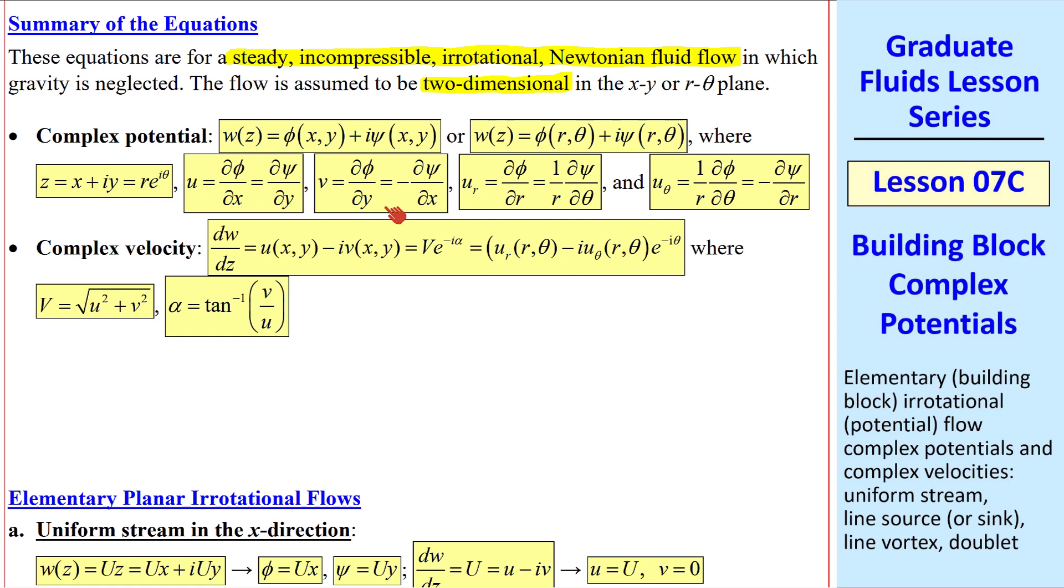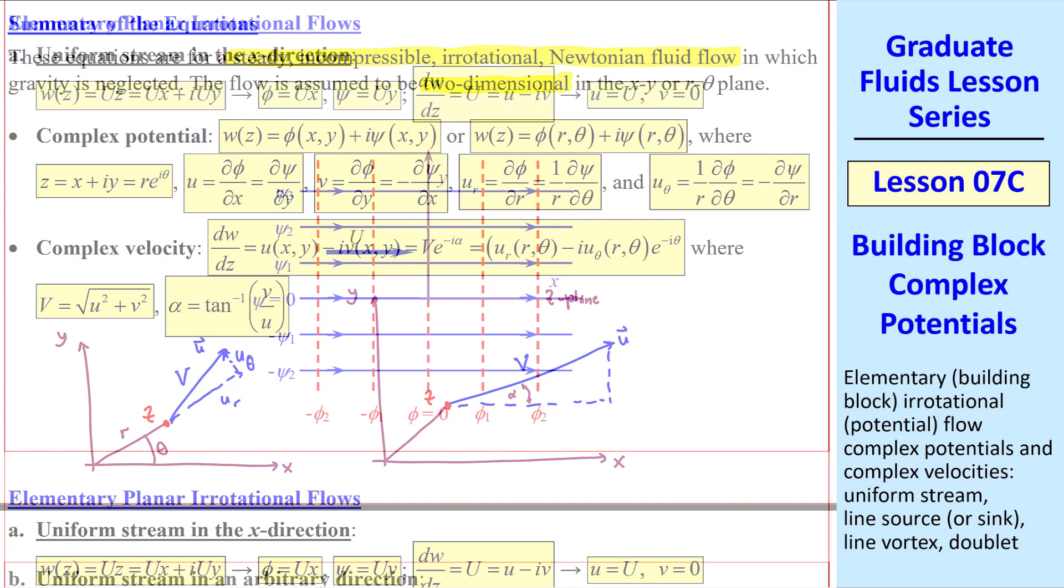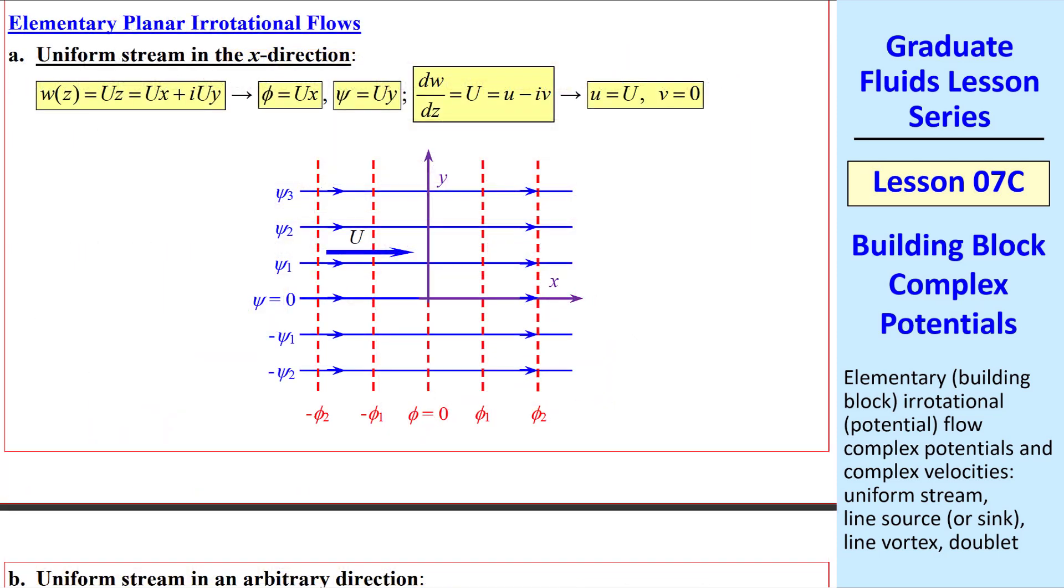These are the expressions for u, v, ur, and u theta in terms of both phi and psi. Embedded within these are the Cauchy-Riemann conditions. We also define complex velocity, which is dw dz, again in either Cartesian or cylindrical coordinates. In our xy-plane, which we also call the z-plane, at some location z, the fluid has some velocity vector u of magnitude v and angle alpha from the horizontal. We can do a similar thing in cylindrical coordinates, where we define radius r and angle theta, and our velocity vector of magnitude v has components ur and u theta.